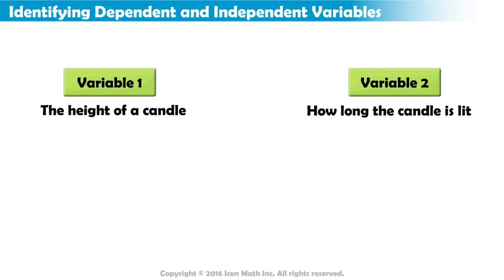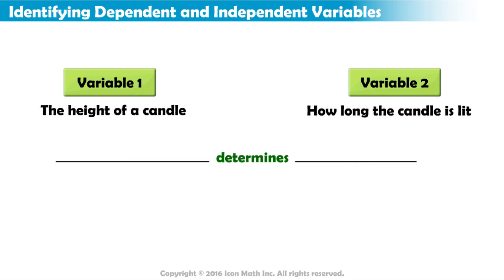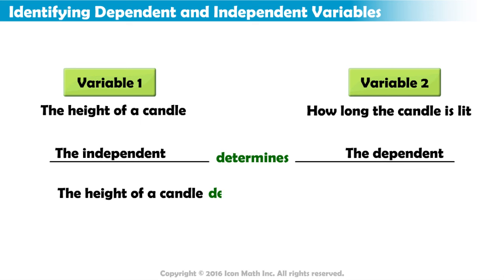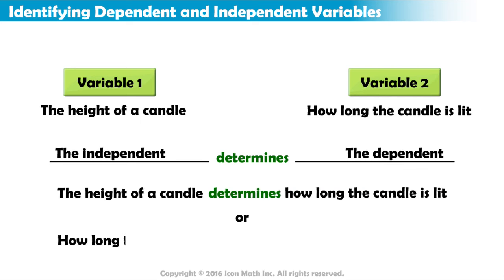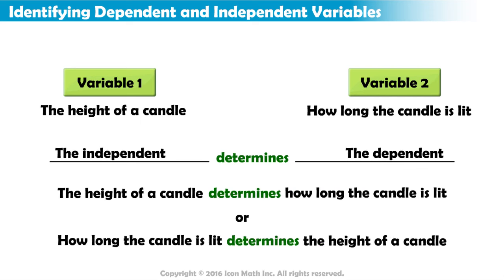We have two variables: the height of a candle and how long the candle is lit. Let's plug them into our sentence structure. The height of a candle determines how long that candle is lit. Or, how long the candle is lit determines the height of that candle.